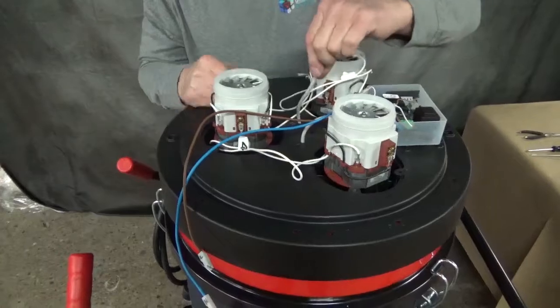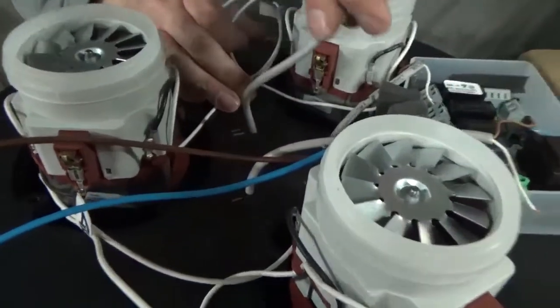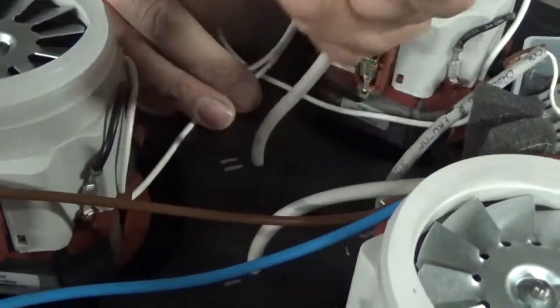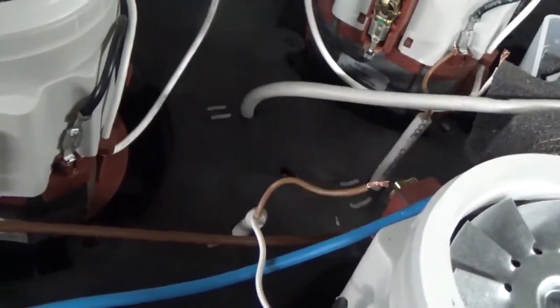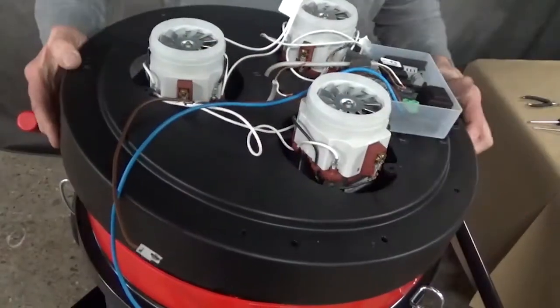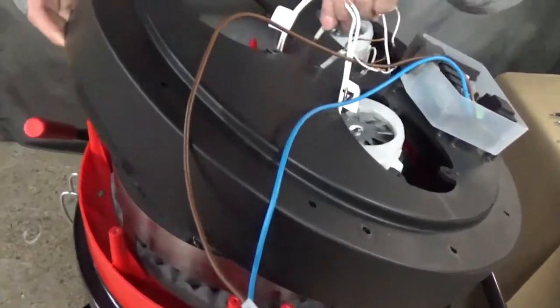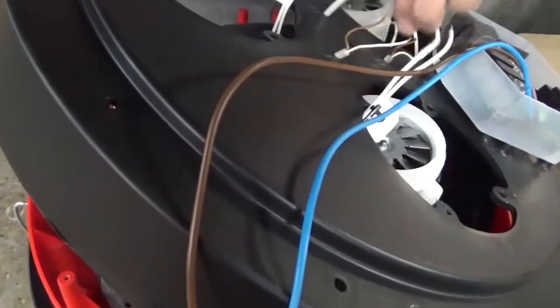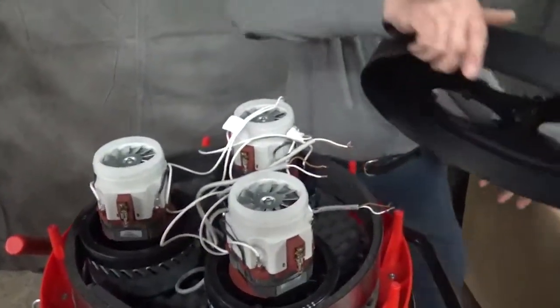I would carefully feed the shaker motor wires back downwards towards the back somewhat before you start lifting the cover off. At this point we should be able to raise the cover up off of the motors carefully, while you're feeding the shaker motor wires back through. Now we can remove the bottom cover.